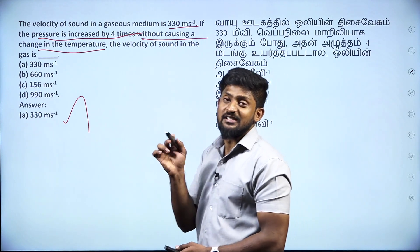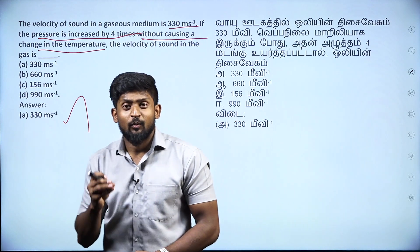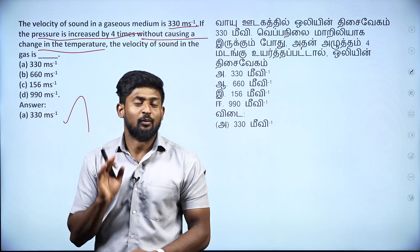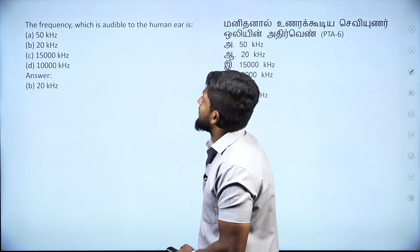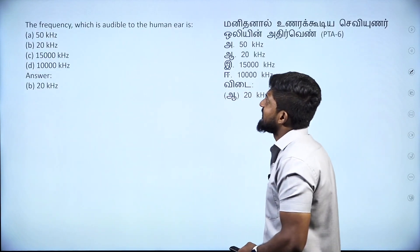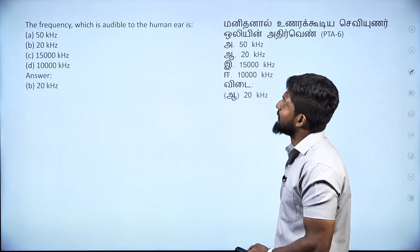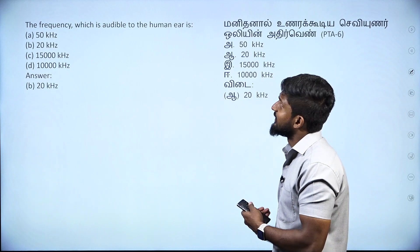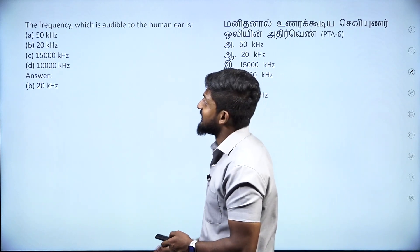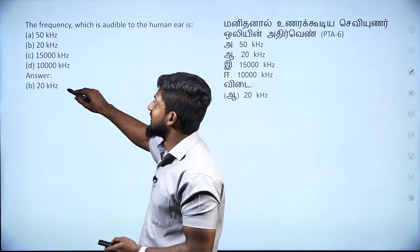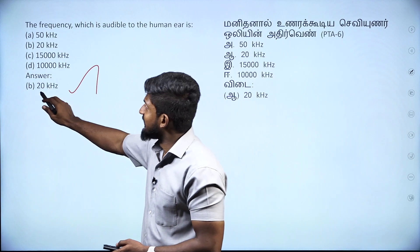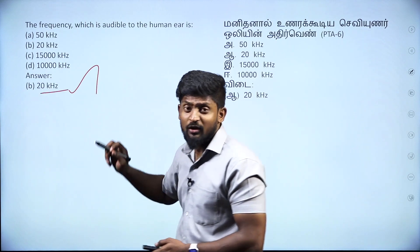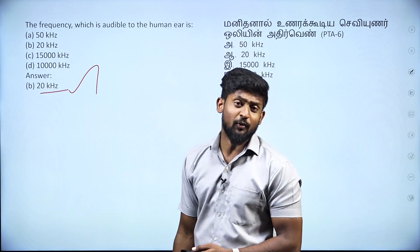The frequency audible to the human ear is 20 hertz to 20,000 hertz. We will say 20,000 hertz is 20 kilohertz.